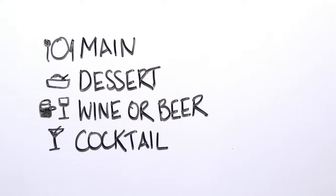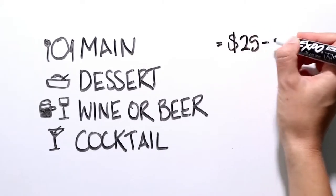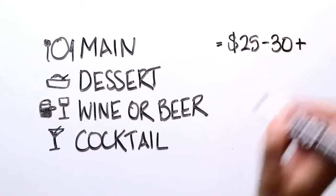But if you're happy to spend more, an average sit-down meal at a restaurant can easily be about $25.00 to $30.00 or more for the main.